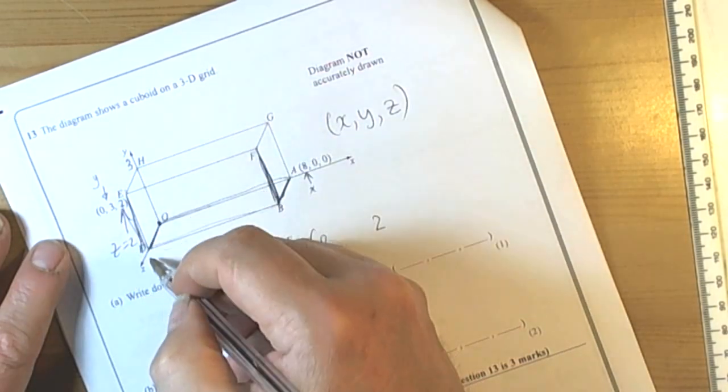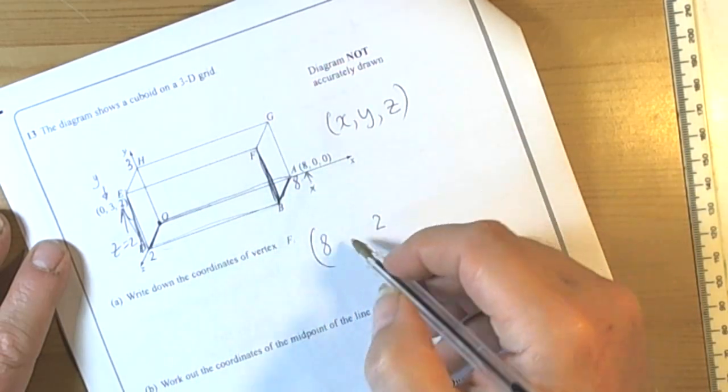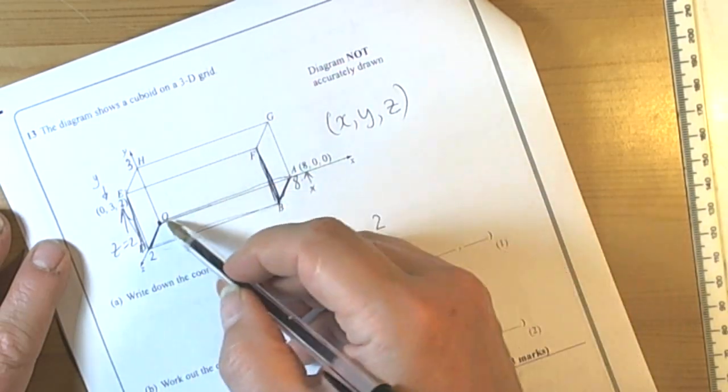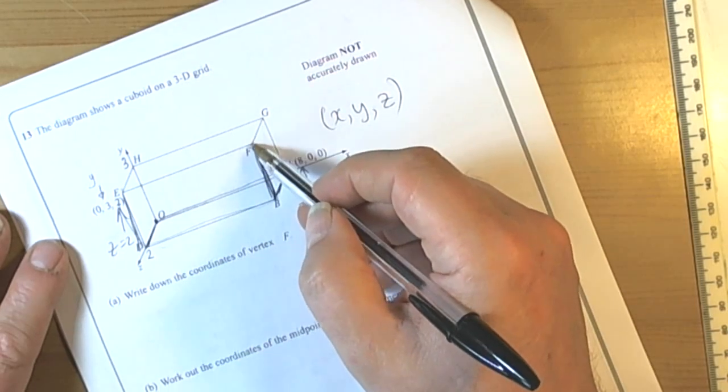So that was going to be 3, that was going to be 2 and this was going to be 8. So to get to F we went 8 along, 2 to the Z and then 3 on the Y.